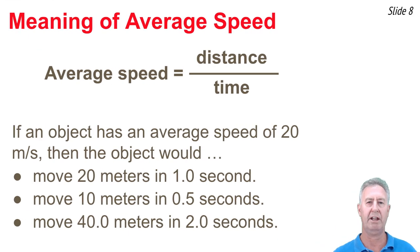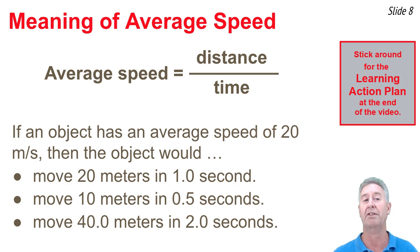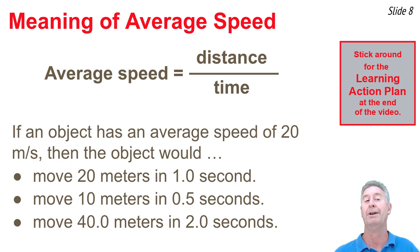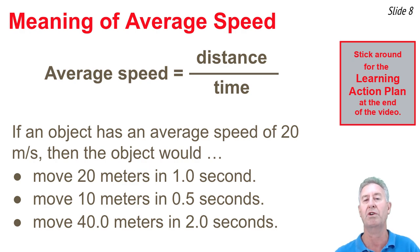The equation gives us an idea of how to calculate average speed, but it doesn't tell us what it means. What does it mean to have an average speed of 20 meters per second? It could mean you moved 20 meters in one second, or 10 meters in half a second, or 40 meters in two seconds. What it really means is that you travel 20 meters for every one second of motion — that's the distance-per-time ratio over the course of a motion.